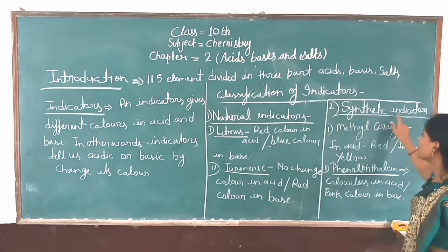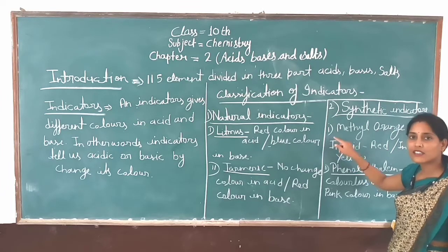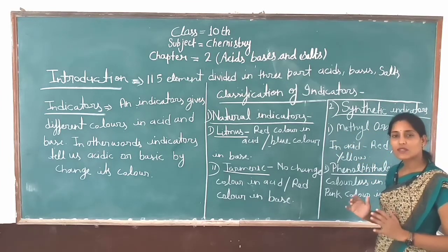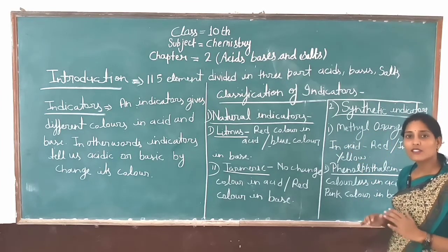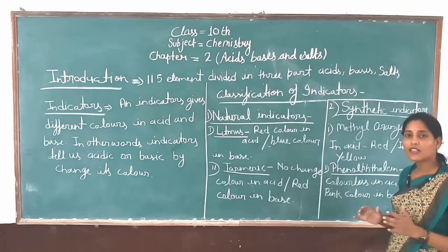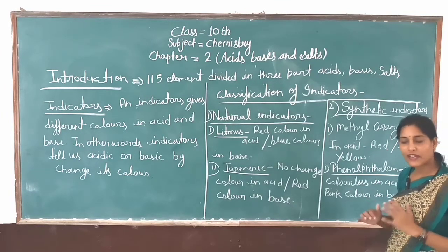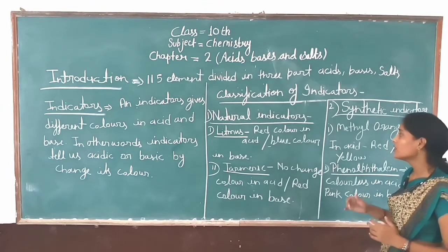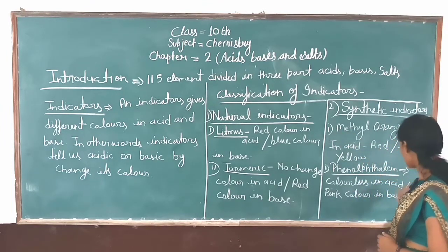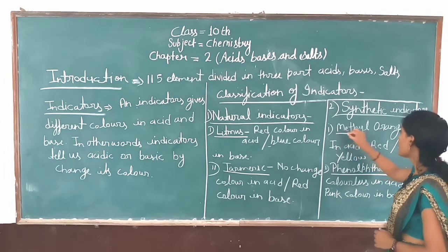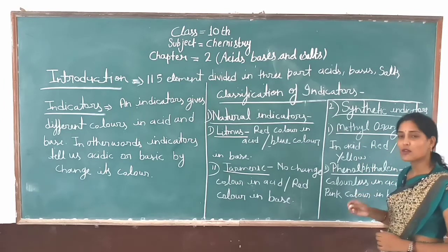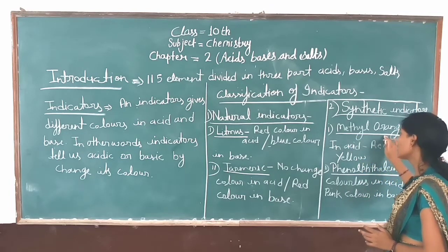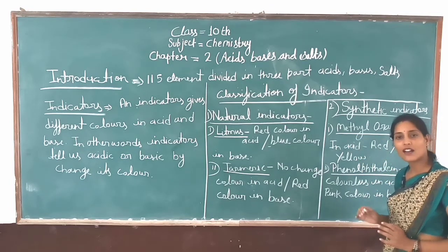Now we have another type: synthetic indicator. Synthetic indicator — from the name itself, it is not natural, meaning we have not obtained it naturally. What we have prepared — we have created it in the laboratory using chemicals. The first one is methyl orange, which is our synthetic indicator.